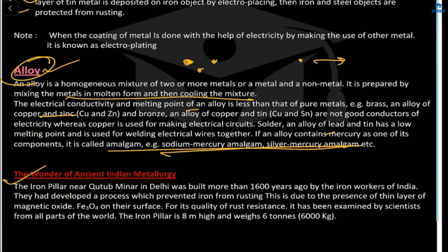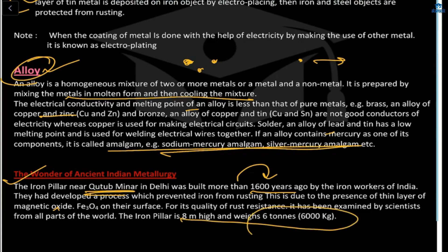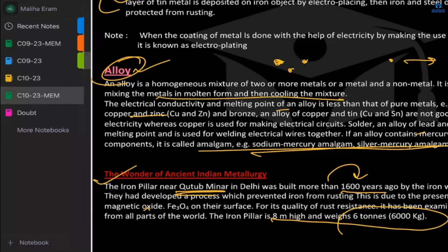A wonder of Indian metallurgy: the iron pillar near Qutub Minar in Delhi was built more than 1600 years ago. Iron workers of India developed a process that prevents iron from rusting. This is due to a thin layer of magnetic iron oxide (Fe3O4) on its surface. The pillar is 8 meters high and weighs 6000 kg — scientists from across India have examined its corrosion-resistant quality.